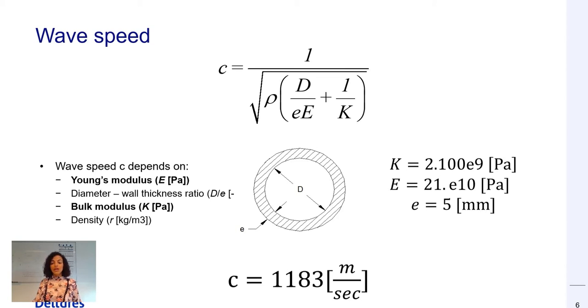Where c, the wave speed in the pipe depends on the liquid density, the pipe's diameter to wall thickness ratio, Young's modulus and bulk modulus. Young's modulus which stands for the pipe's elasticity depends on the pipe's material and the bulk modulus stands for the volumetric compressibility of the liquid.